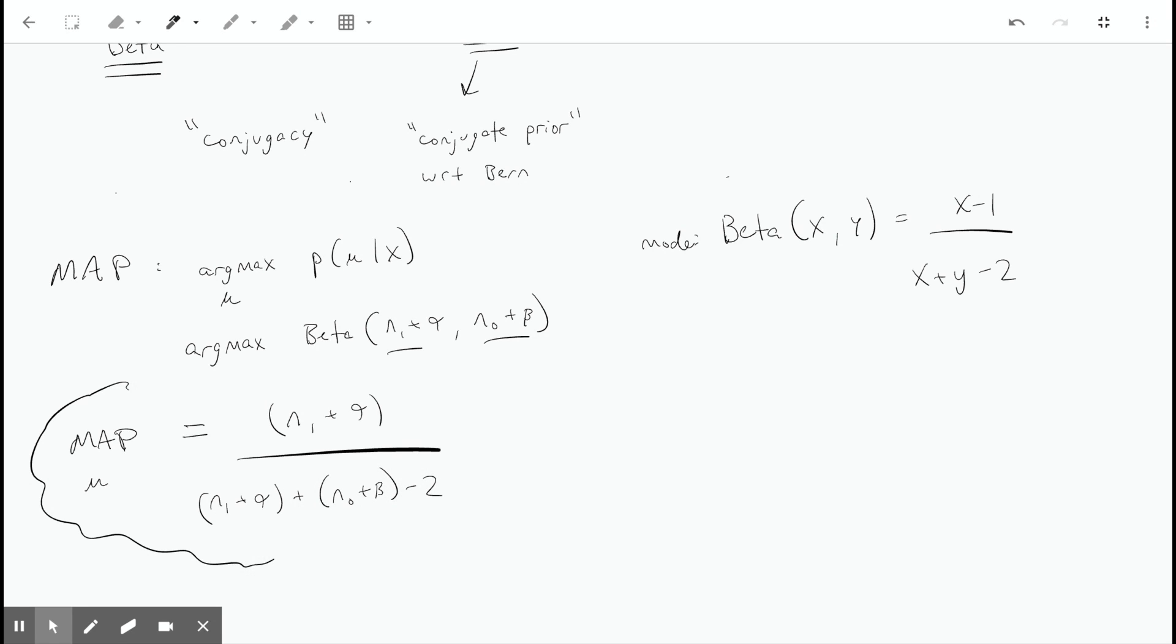We can compare this to the prior beta distribution. At that time, if we were looking at the mode, we would have just said mu equals alpha minus 1 over alpha plus beta minus 2.